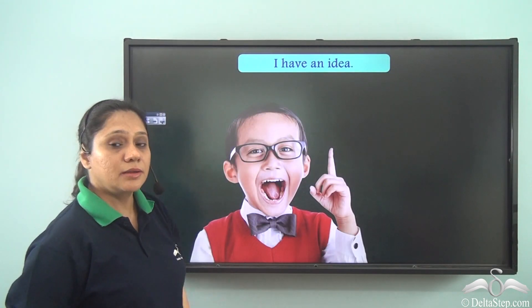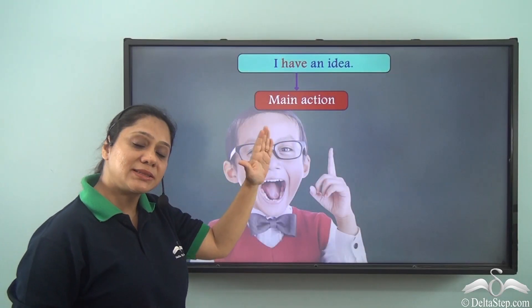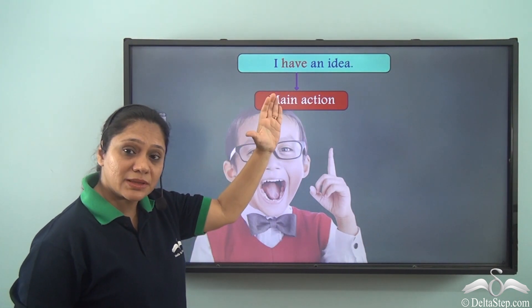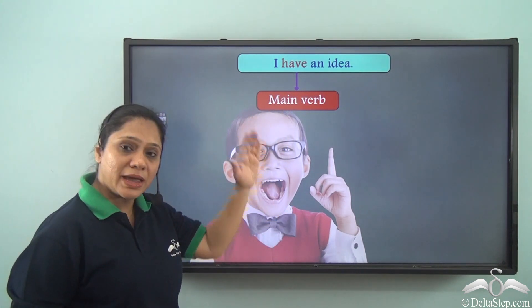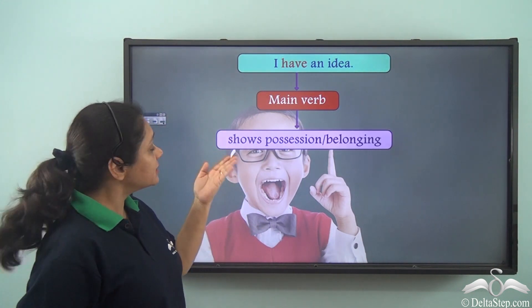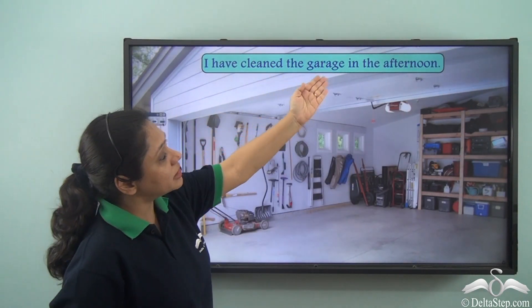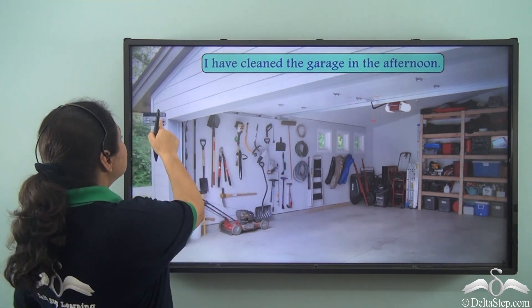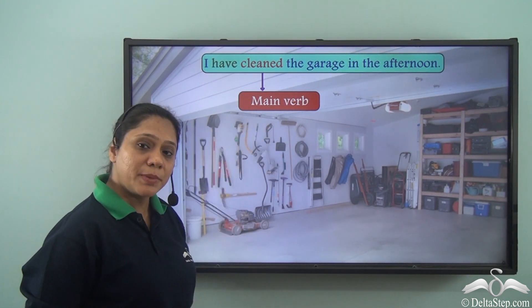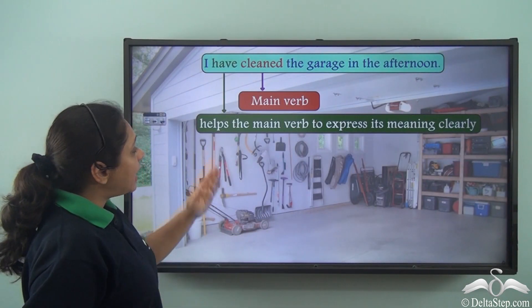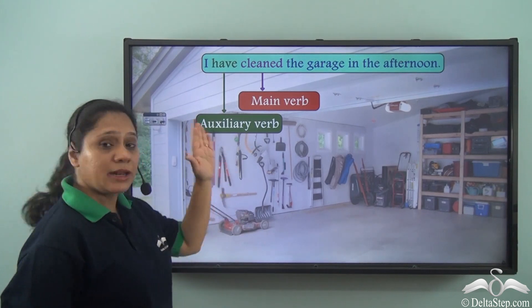Consider the sentence: 'I have an idea.' Here the word 'have' is showing the main action, and since there is no other verb in the sentence, it is the only verb — the main verb — showing possession or belonging. But if we say 'I have cleaned the garage in the afternoon,' then 'cleaned' is showing the main action, making it the main verb, while 'have' helps the main verb express its meaning clearly. So 'have' here is an auxiliary verb.